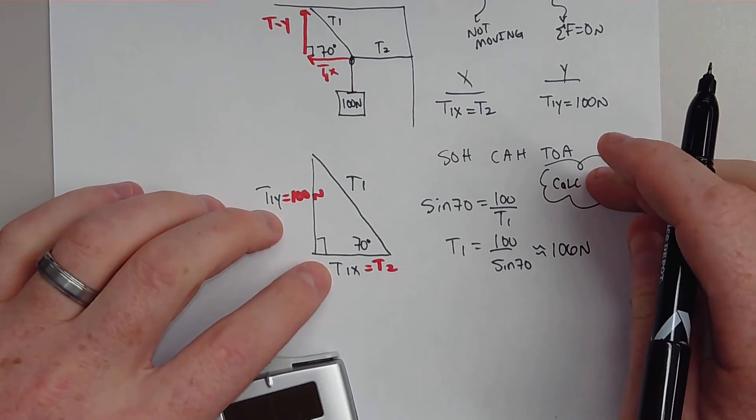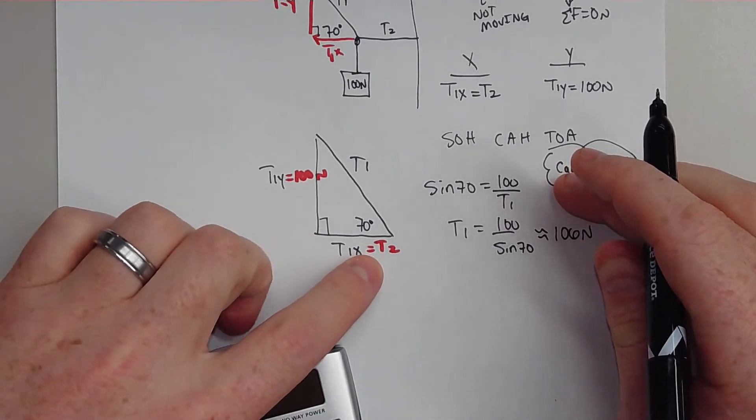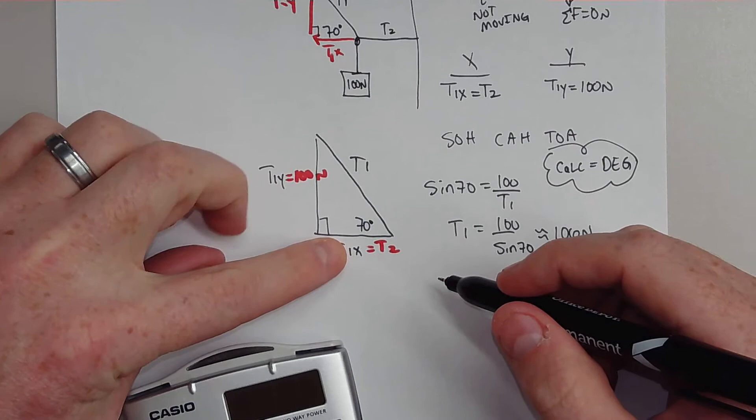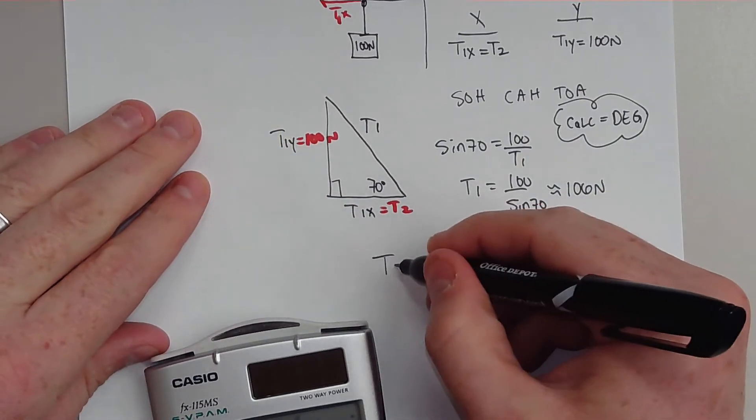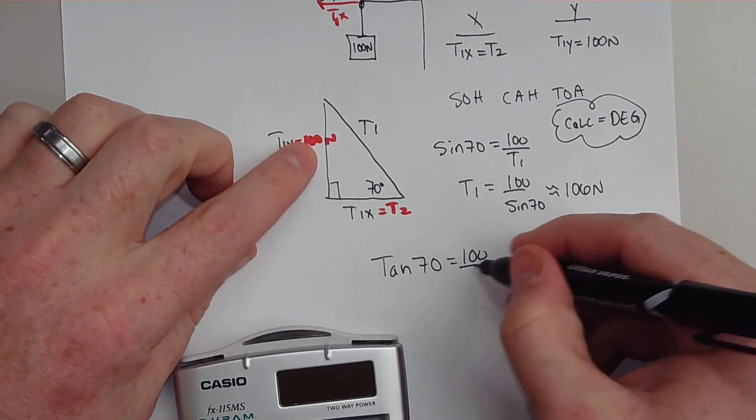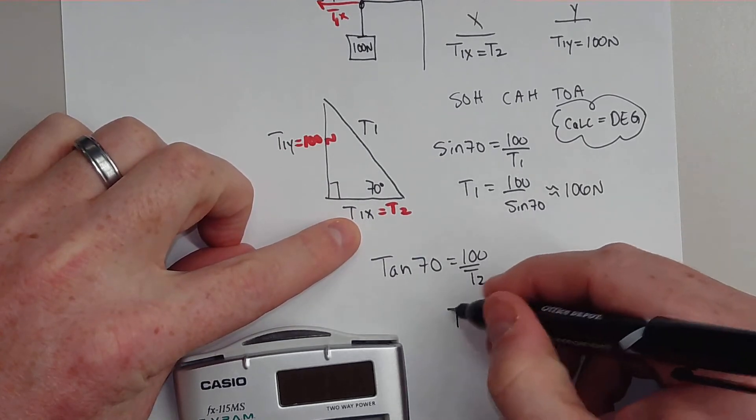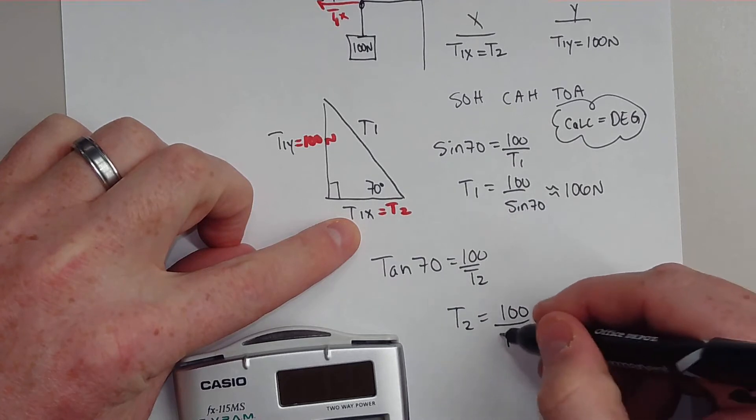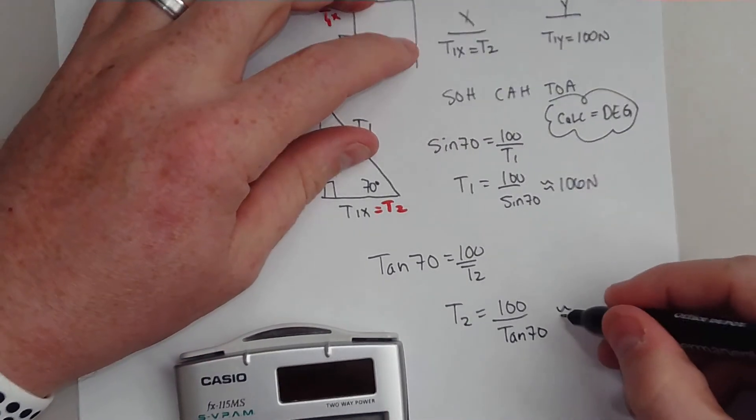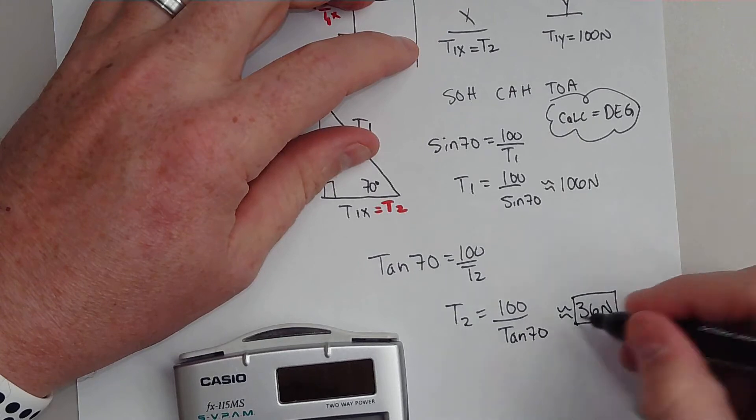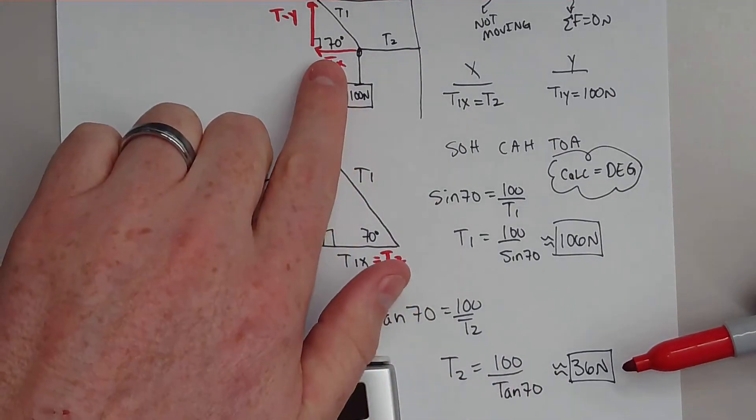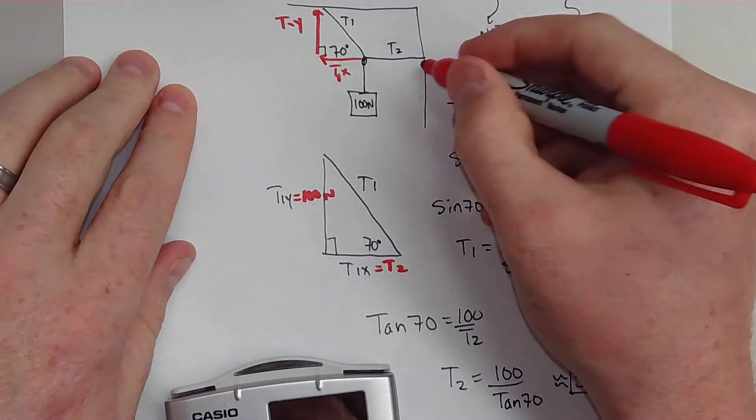Now if you want to solve for T2, remember T1X is actually equal to T2. I have my opposite and my adjacent, so opposite and adjacent is tangent. So tan of 70 is equal to the opposite side over my adjacent, which is T2. So T2 is equal to 100 divided by tangent of 70, and that gives me approximately 36 newtons.